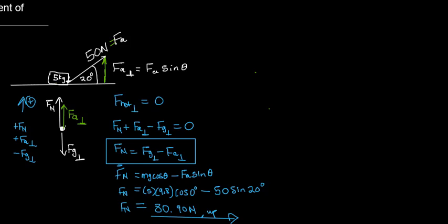Now the best thing is to know how to find the frictional force. The frictional force is basically equal to the coefficient of friction times the normal force. That's why we spend a lot of time finding the normal force — because we need friction to find the resultant force and the acceleration of the objects on the surface.